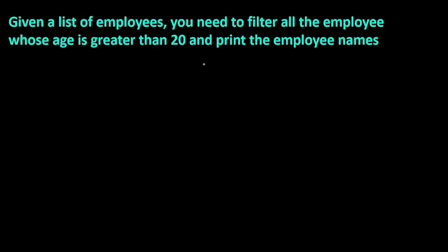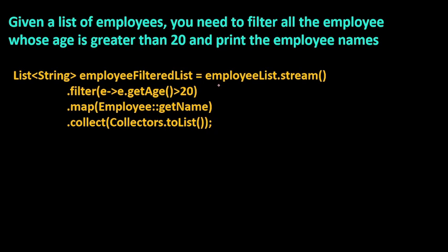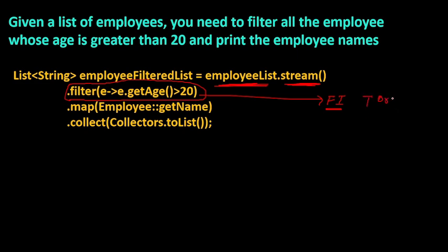The very first question: given a list of employees, filter out all the employees whose age is greater than 20 and print all the employees. So here is our employee list and we are putting a stream on it, then filtering with age greater than 20. The filter is a functional interface expecting one argument and returning either true or false.